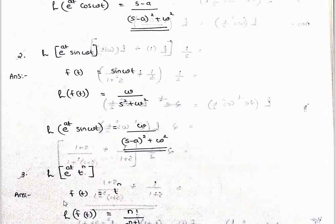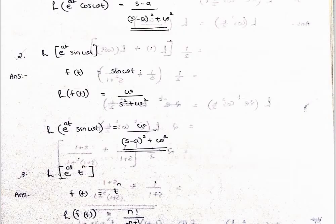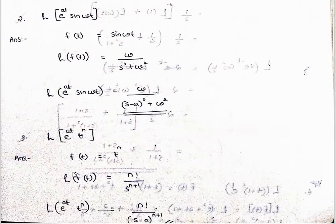Now for e raised to at times t raised to n: f of t is t raised to n. The Laplace transform is n factorial divided by s raised to n plus 1. With e raised to at, replace s with s minus a, giving n factorial divided by (s minus a) raised to n plus 1.